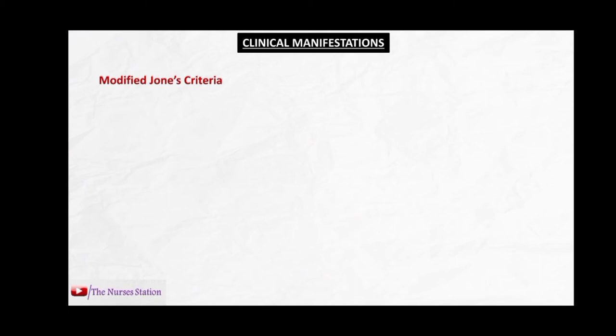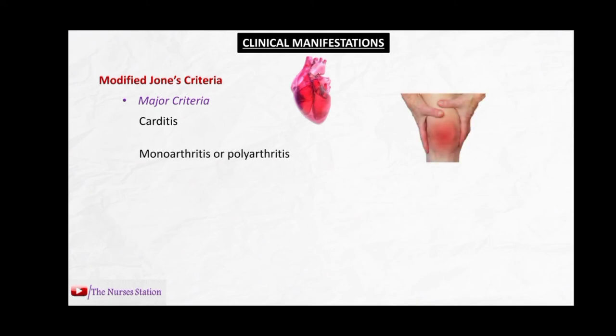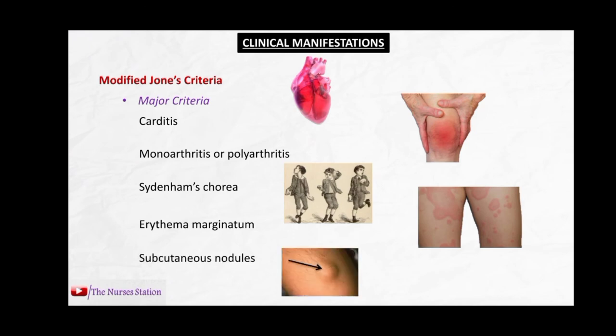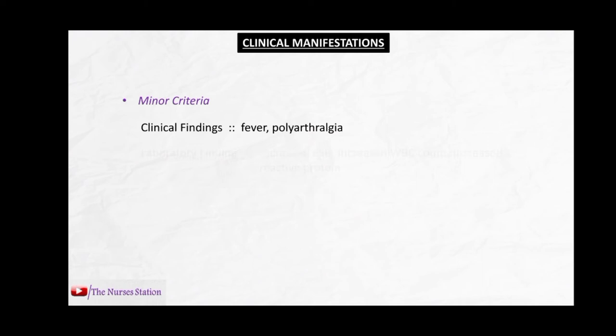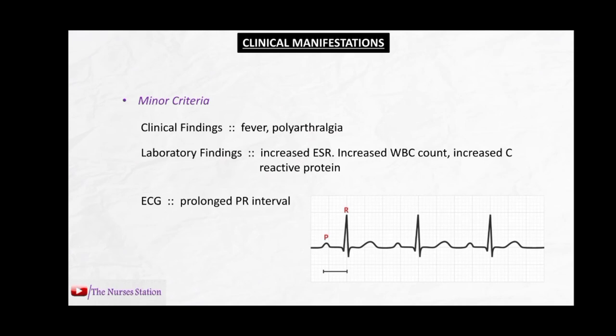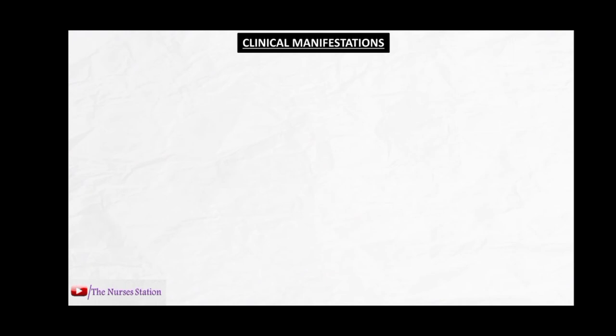Clinical manifestations of rheumatic fever are assessed by the modified Jones criteria. There are two types: major criteria and minor criteria. The five major criteria include carditis (inflammation of the heart), monoarthritis or polyarthritis (inflammation of single or multiple synovial joints), Sydenham's chorea, erythema marginatum, and subcutaneous nodules. The minor criteria include clinical findings like fever and polyarthralgia, laboratory findings like increased ESR, increased WBC count, increased C-reactive protein, and ECG findings such as a prolonged PR interval.